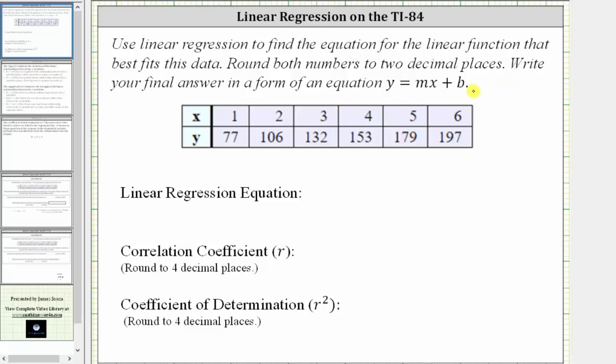Write the equation in slope-intercept form with a form y equals mx plus b. We will also find r, the correlation coefficient, as well as r squared, the coefficient of determination, rounded to four decimal places.